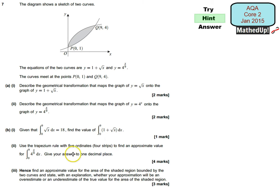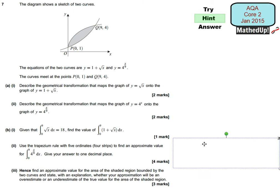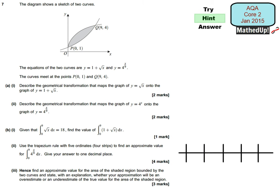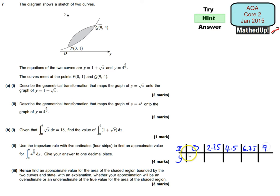Part 2 says use the trapezium rule with five ordinates or four strips to find the approximate value of this integral, giving the answer to one decimal place. When using the trapezium rule with four strips and limits between 0 and 9, we draw a table with x and y coordinates. Our first value is 0 and because we have four strips we divide 9 by 4, giving us 0, 2.25, 4.5, 6.75, and 9.